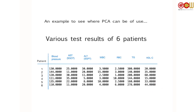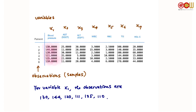In practice, we can have many many more tests and many many more patients, giving us a very large table. For example, we can have a million patients and hundreds of tests, so we have a large amount of data. For illustration purposes, let's stick to only a few tests and a small number of patients.